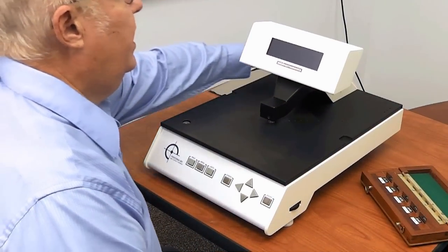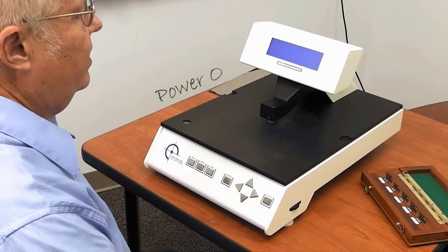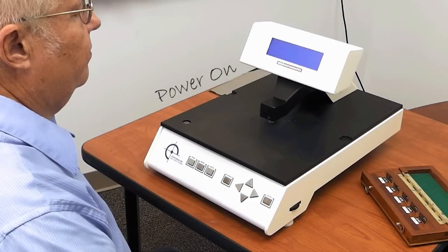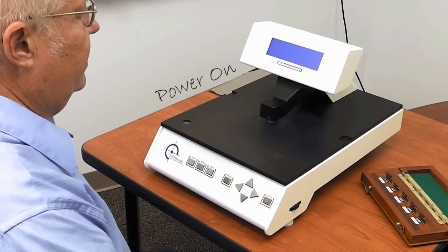First, I'm going to turn the gauge on and allow it to warm up for 30 minutes. The switch is located in the back of the gauge. It'll take a couple of seconds for the gauge to come up and a display reading to be shown.